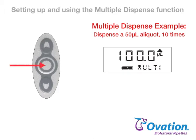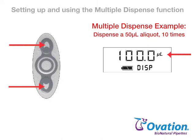Press and release the center button until Multi appears on the display, then press the up or down arrow and the current volume setting for individual dispenses is shown. Press the up or down arrow again to change the volume to the desired setting.